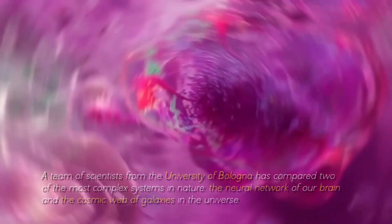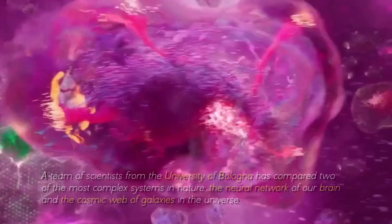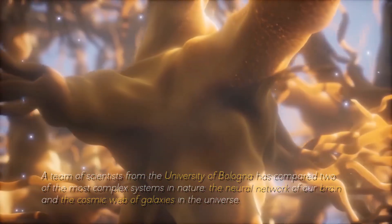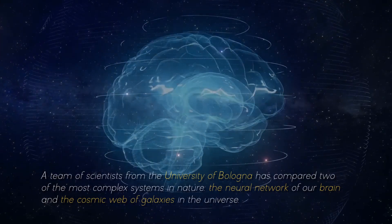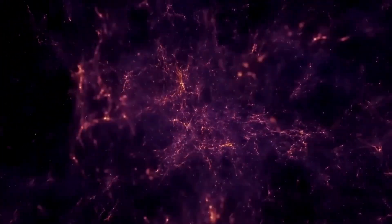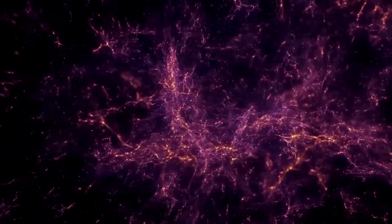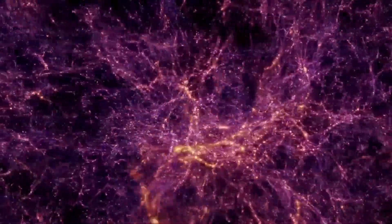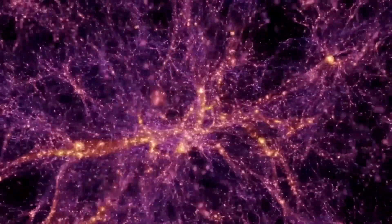A team of scientists from the University of Bologna has compared two of the most complex systems in nature, the neural network of our brain and the cosmic web of galaxies in the universe. What did they discover? That they are incredibly similar. And not just as they look if we compare a human neuron with a cluster of galaxies. There's more.